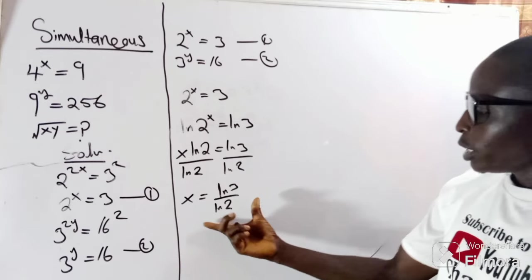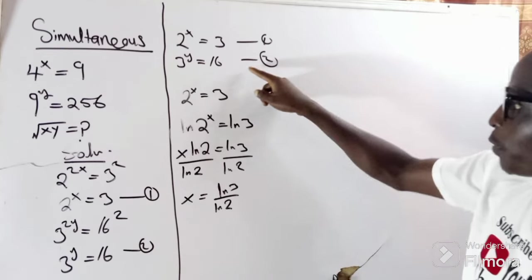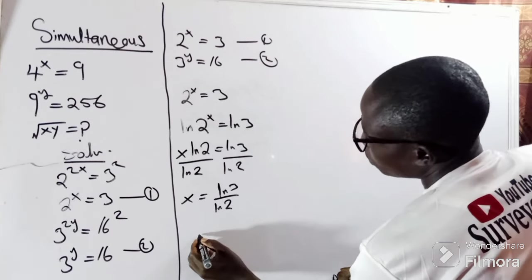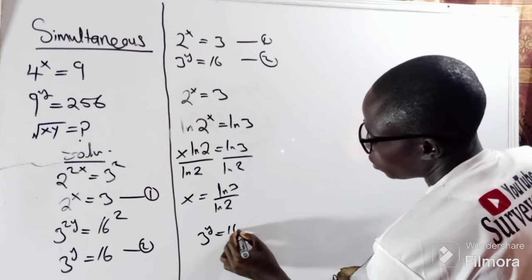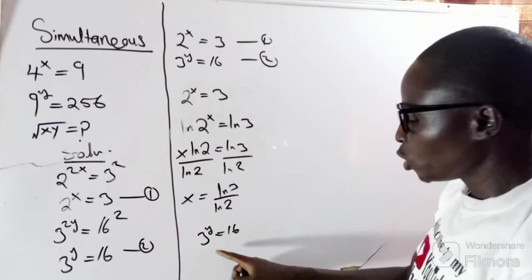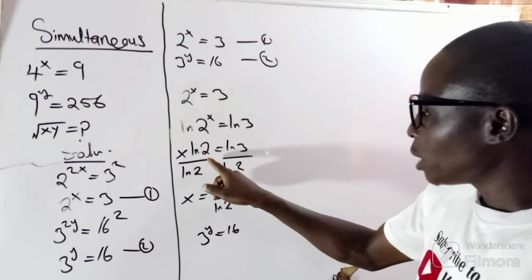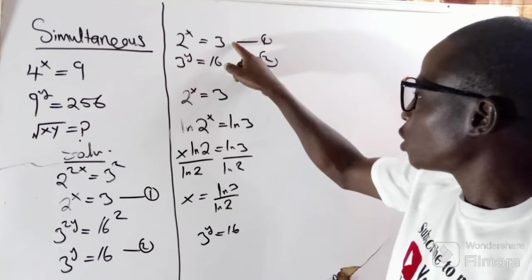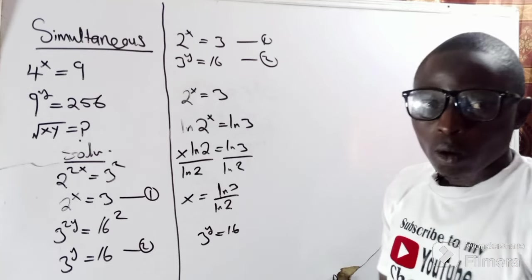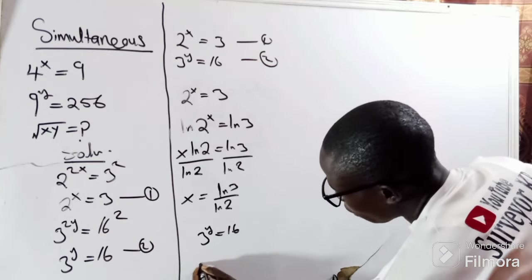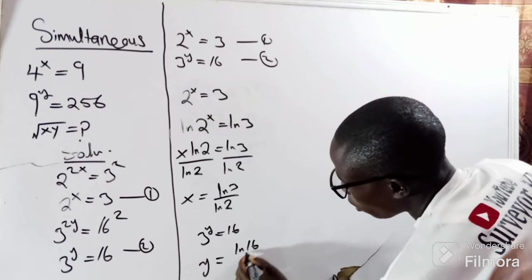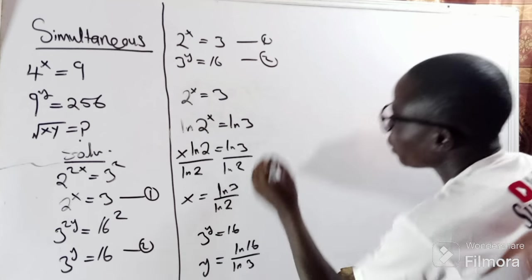That is the value of x. Now let's find the value of y. From the second equation, 3 to the power of y equals 16. There's no way to make the bases the same, so we apply the natural log just as before. We get y equals ln(16) divided by ln(3).